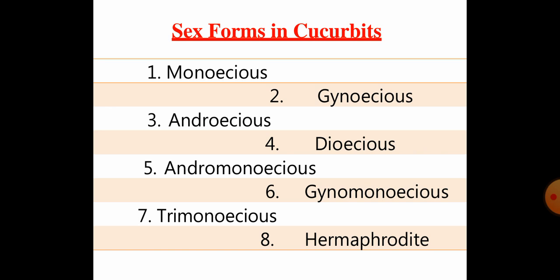Andromonoecious type means the plant produces both male and bisexual flowers. It is mostly seen in muskmelon as well as some cultivars of watermelon. Non-desert forms like oriental pickling melon and some Cucumis melo cultivars are monoecious. Gynomonoecious means the plant produces female and bisexual flowers, and it is mostly observed in cucumber. So: andromonoecious means male and bisexual flowers; gynomonoecious means female and bisexual flowers.